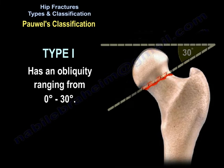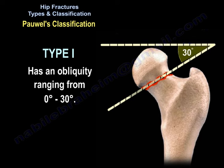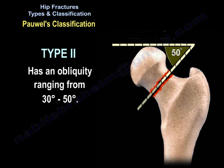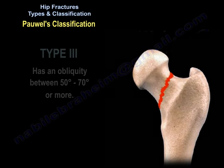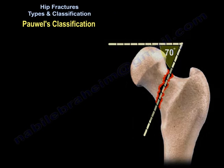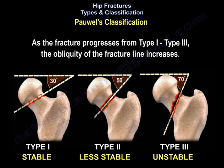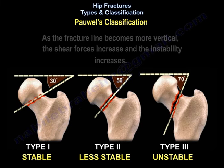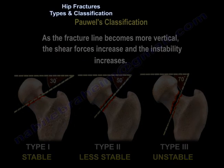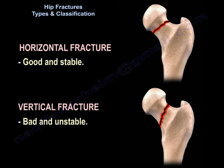Type 1 has an obliquity less than 30 degrees. Type 2 has an obliquity from 30 to 50 degrees. Type 3 has an obliquity between 50 to 70 degrees or more. As the fracture progresses from type 1 to type 3, the obliquity of the fracture line increases, it becomes more vertical, shear forces increase, and instability increases. Horizontal fractures are good and stable; vertical fractures are bad and unstable.